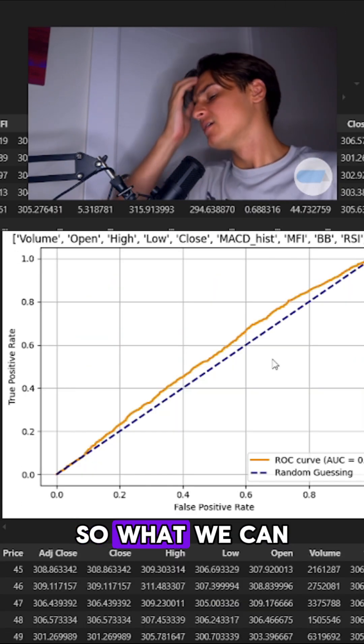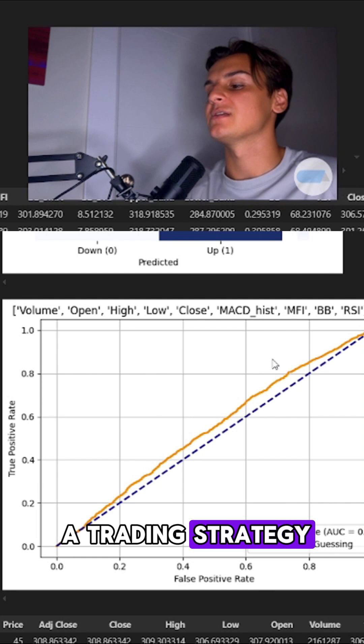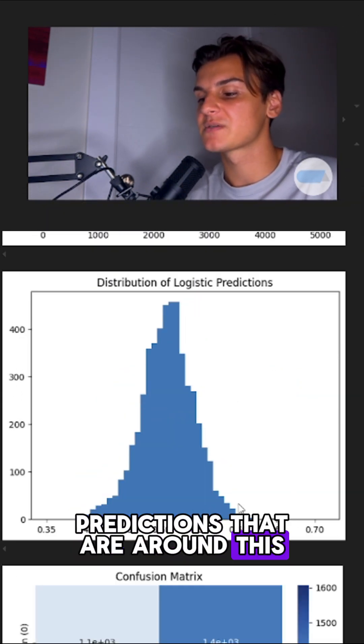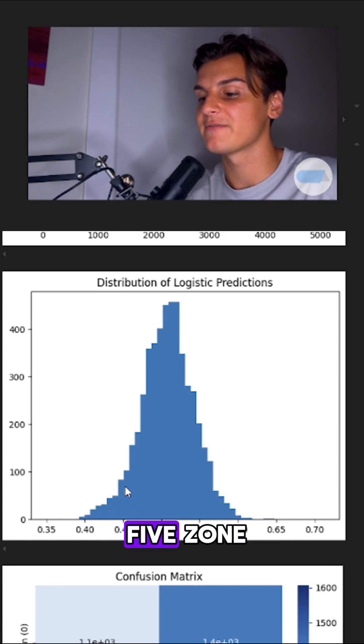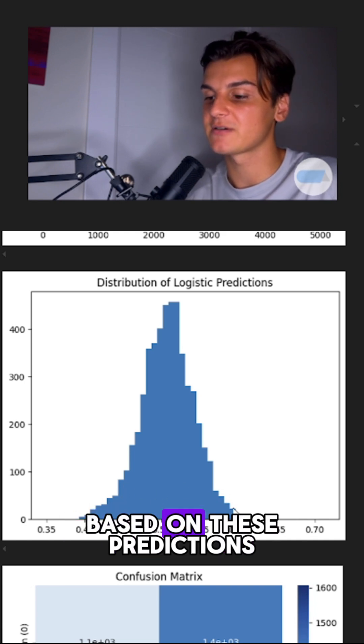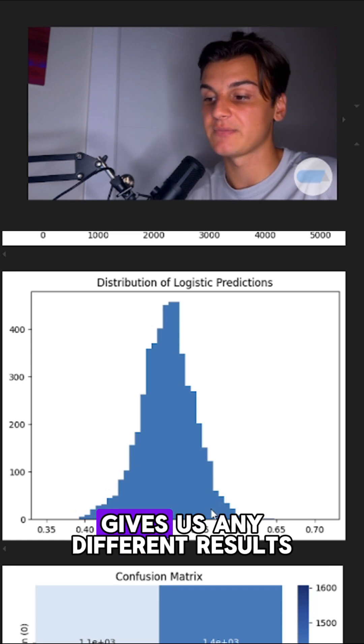So what we can do is set up a trading strategy that only looks for predictions around this 0.55 to 0.45 zone, and then take trades based on these predictions and see if that gives us any different results.